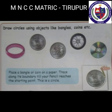How to draw a circle using objects like bangles, coins, etc. Place a bangle or coin on a paper. Trace along its boundary until your pencil reaches the starting point. This is a circle. A circle has no sides and no corners.